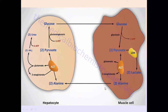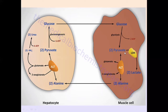Now let's focus on how alanine is formed. For example, from protein catabolism, when the amino group is released, it is converted into ammonia and then into glutamate through transamination reactions from different amino acids. Glutamate then transfers its amino group to pyruvate — pyruvate being the 3-carbon end product of glucose metabolism. Glutamate contains the amino group, and pyruvate does not. The glutamate transfers the amino group to pyruvate, and pyruvate receives the amino group and becomes alanine.